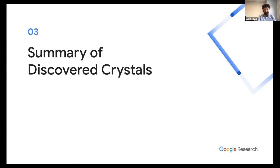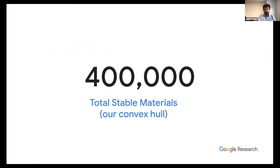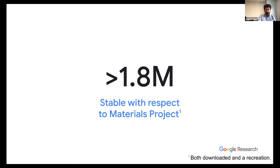Before handing it over to Doj, I want to talk about our summary of discovered crystals. Our convex hull now consists of approximately 400,000 total stable materials, with 1.8 million stable with respect to Materials Project. An important footnote: energies are computed from a download of Materials Project and also a recreation internally — we reproduced energies via DFT with our standard settings and took the lower of the two energies. Stable means stable with respect to the lower of the two energies for all Materials Project structures we computed — we just wanted to make sure the comparison was like-for-like.